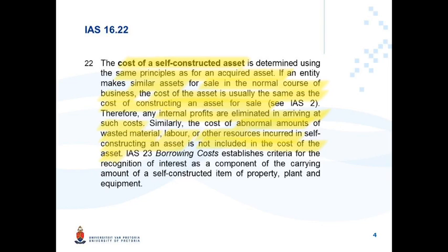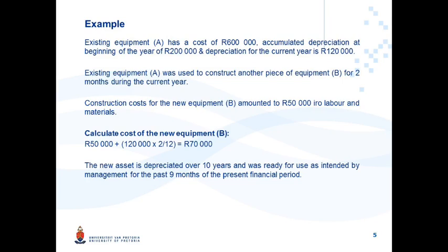Let's look at an example. Existing Equipment A has a cost of 600,000 Rand, accumulated depreciation at the beginning of the year of 200,000 Rand, and depreciation for the current year of 120,000 Rand. Equipment A was used to construct another piece of equipment — Equipment B, a PPE item — for two months during the current year. Construction costs for the new Equipment B amounted to 50,000 Rand in respect of labor and materials.